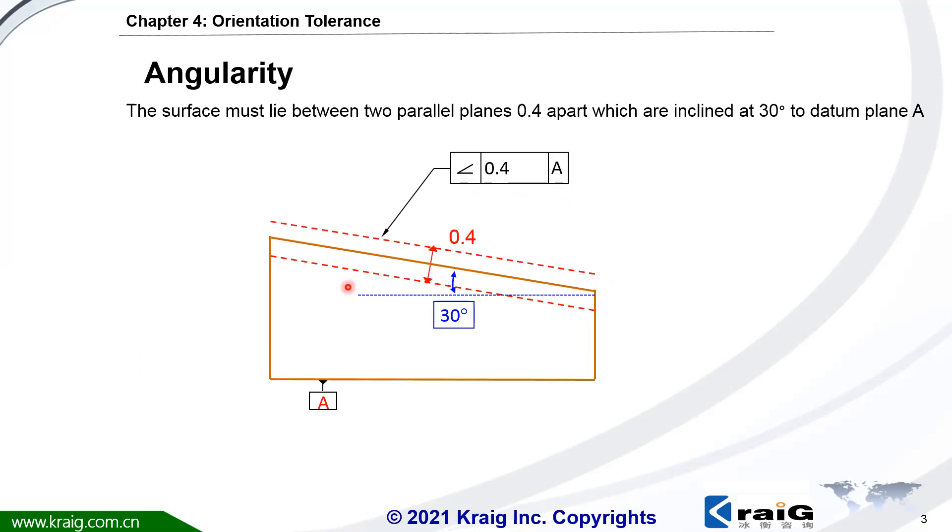Tolerance zone is two parallel straight surfaces with 0.4 distance apart. And this tolerance zone is at a theoretical angle to datum A. Here is 30 degrees. This is TD.